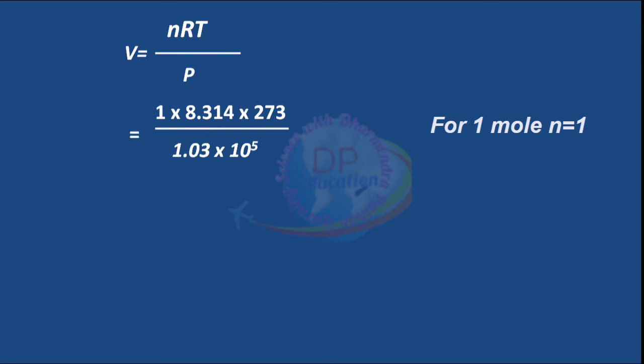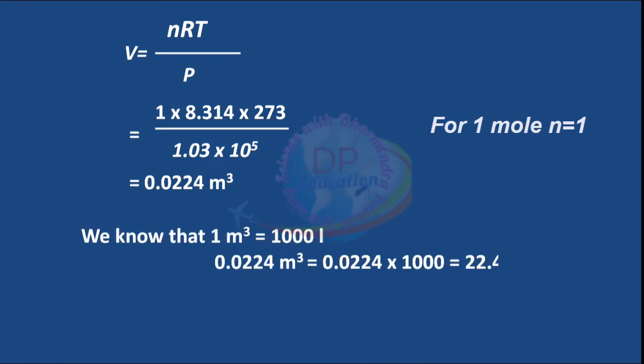For N equals 1 mole, that is 1 times 8.314 times 273 upon 1.03 times 10 to the power 5, which equals 0.0224 cubic meter.